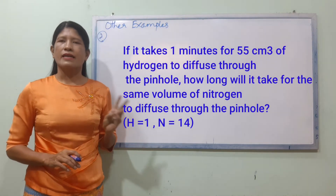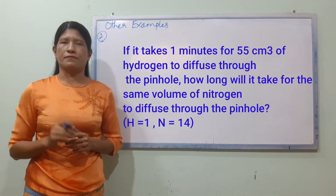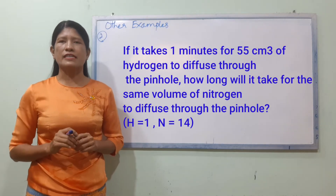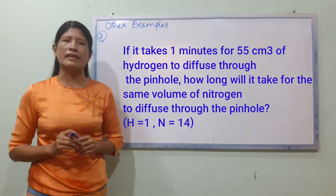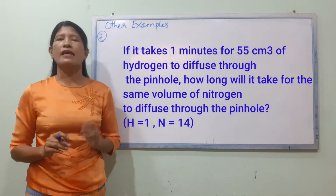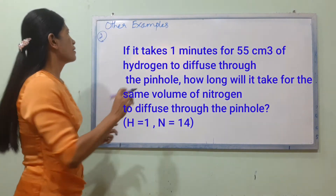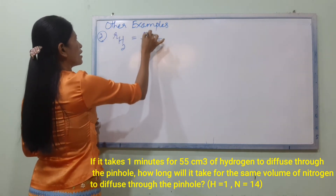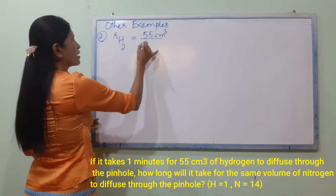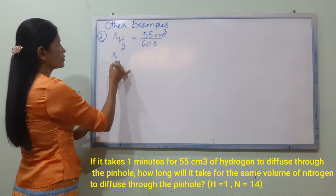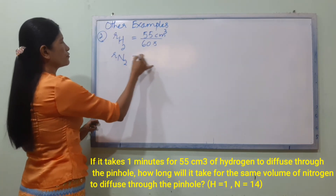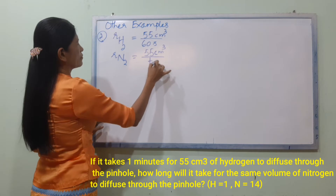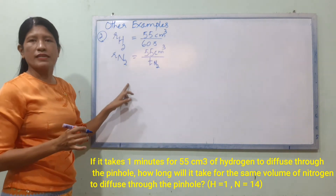Example number 2: We have 55 cm³ of hydrogen gas. The hydrogen rate of diffusion R_H2 uses volume 55 cm² in 1 minute — that's 60 seconds. Nitrogen has the same volume of 55 cm². We need to find the nitrogen rate of diffusion.